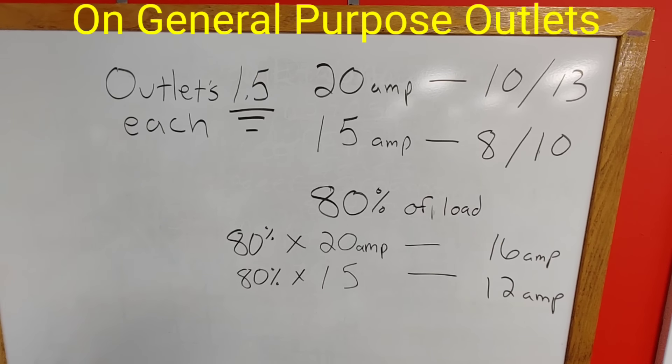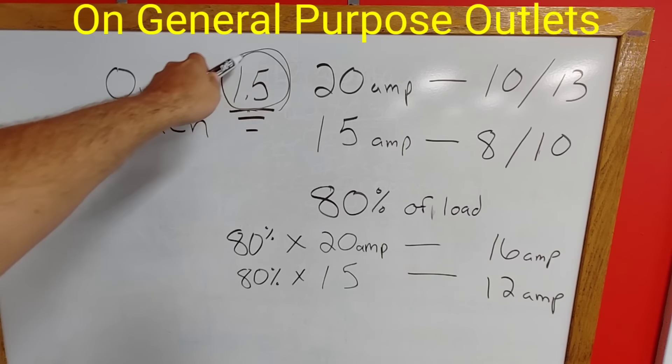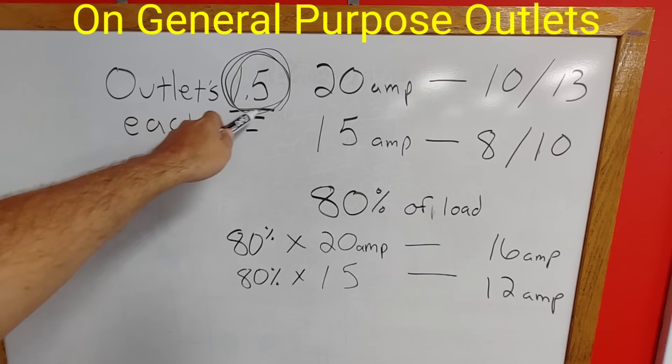Now typically the first thing I want to tell you is most people are going to tell you right now you should treat each outlet as 1.5 amps. That's kind of the general rule of thumb. I hear a lot of different numbers, but me personally I've always treated an outlet as 1.5 amps. Pretty simple.